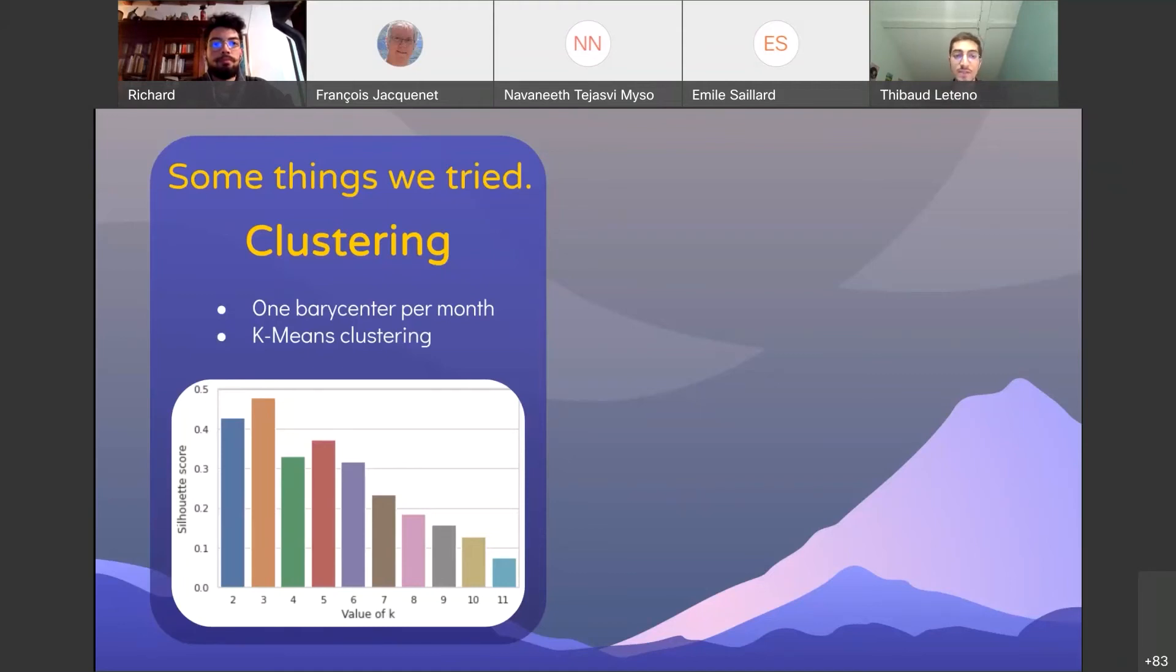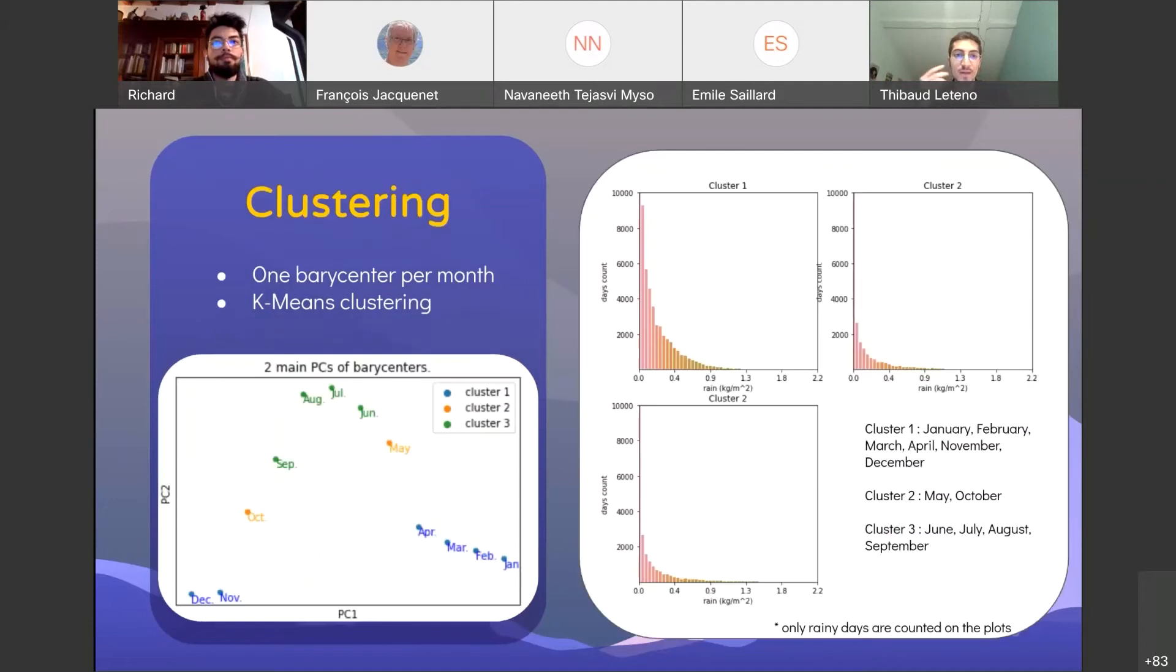So we need three clusters. So after, we wondered, are those clusters relevant? And on the left figure, we observed a projection in two dimensions of those barycenters with legends corresponding to each cluster. And we see that it apparently makes sense to create those clusters.